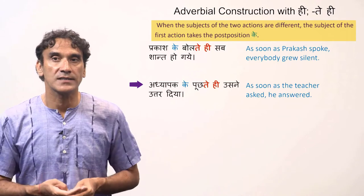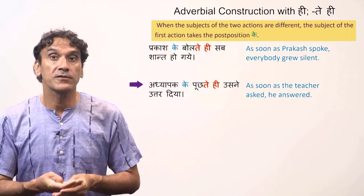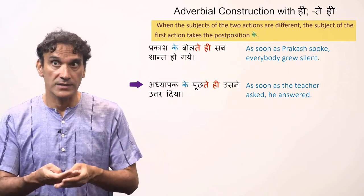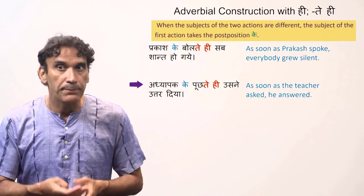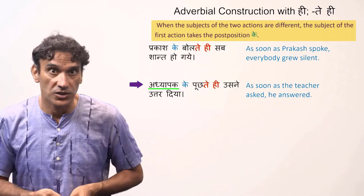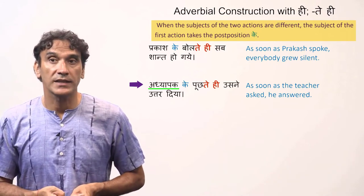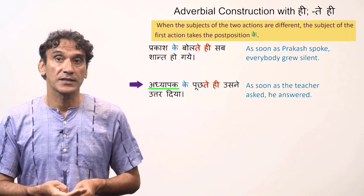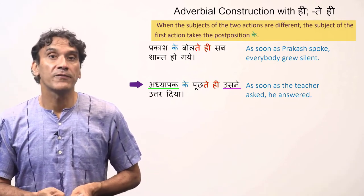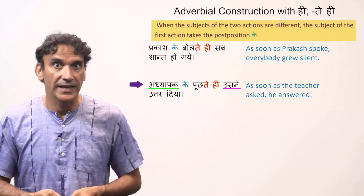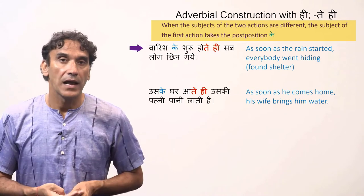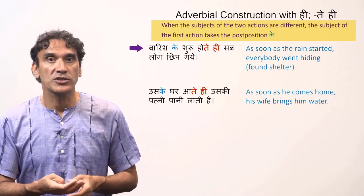The next example: 'Adhyapak ke poochtehi usne uttar diya' — as soon as the teacher asked, he answered. The first verb is 'poochna' (to ask) and the second verb is 'uttar diya' (to answer). They both have different subjects: 'poochna' has the subject 'the teacher', and 'uttar diya' has the subject 'he' (usne). The subject of the adverbial form 'poochtehi' takes the postposition 'ke' — 'adhyapak ke poochtehi'.